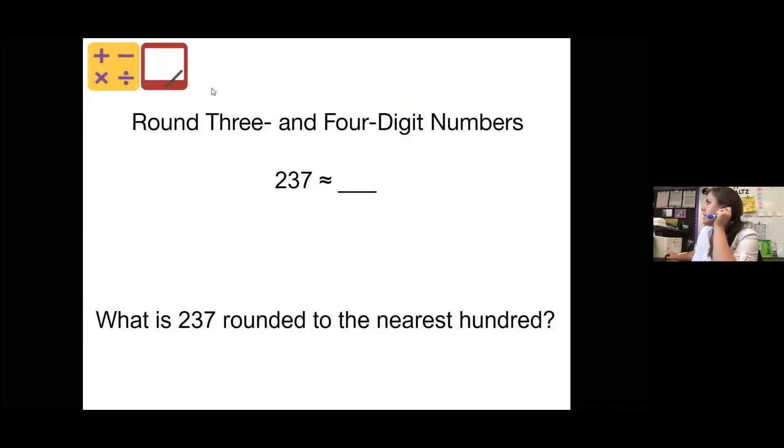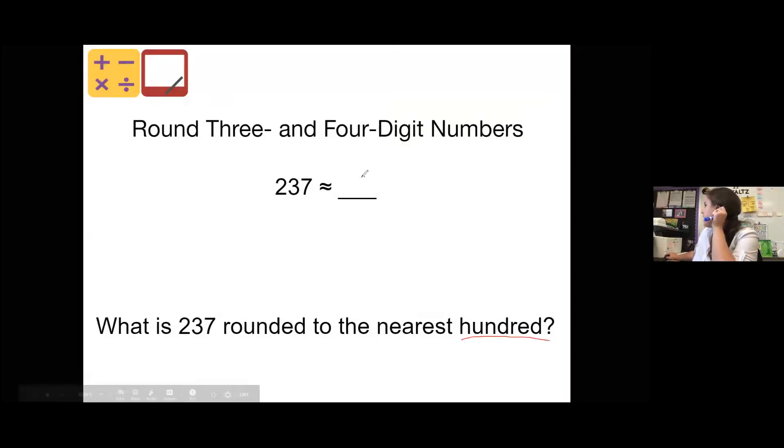All right, we're going to round this to the nearest 100. Remember, with the nearest 100, our answer is going to end with two zeros. So 237, what does that round to? If you need more time, pause the video. 237 rounds down to 200. 237 is below the halfway point of 250.